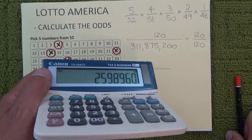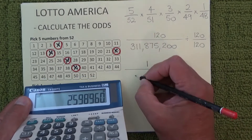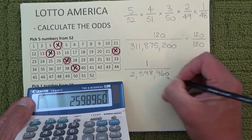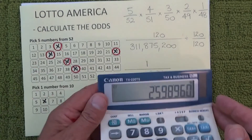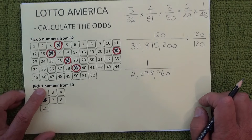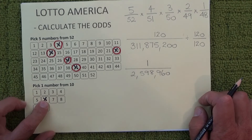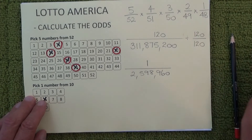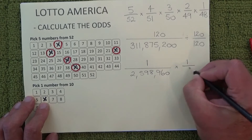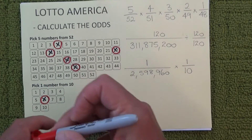Dividing that 311 million figure by 120, we end up with one chance in 2,598,960. So that's your chances of matching just five numbers from 52. But we also have to match the star ball to win first prize, so we've got one to match, and when the star ball is drawn it's one chance in 10 of matching the star ball.